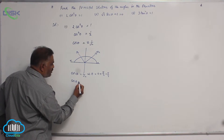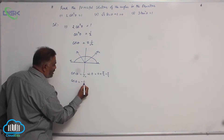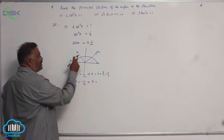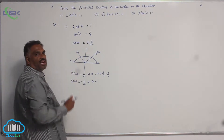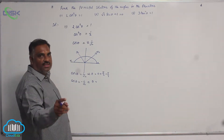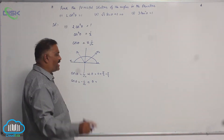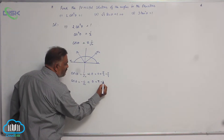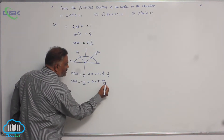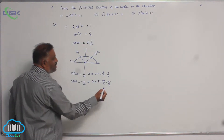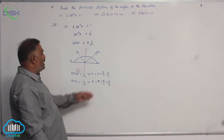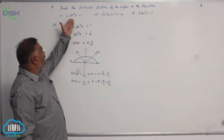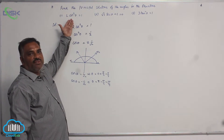Cos theta equal to minus 1 by root 2 implies theta is in the second quadrant. Since cos theta is negative in the second quadrant, theta is pi minus pi by 4, which equals 3 pi by 4. So pi by 4 and 3 pi by 4 are the principal solutions of this equation.